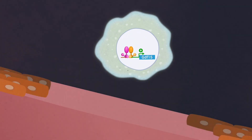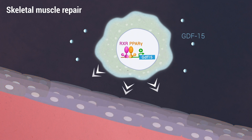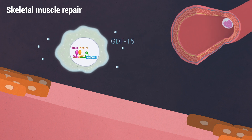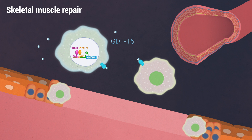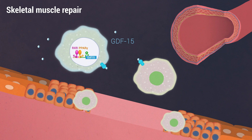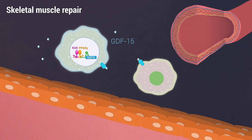Taken together, our data identified the PPAR-gamma/RXR/GDF-15 axis as a novel and essential component of macrophage-mediated skeletal muscle repair. They support a role for GDF-15 as a local autocrine and paracrine factor coordinating myoblast proliferation and myeloid cell invasion and activity during tissue injury.